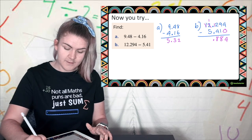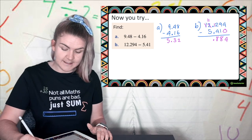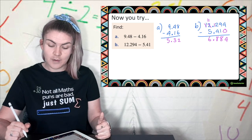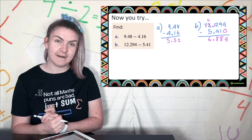1 take 5 we can't do so I borrow this one and that is 11 take 5 which is 6 and then there's nothing else left. Check the reasonableness. 12 take away 5 is 7. This is approximately 7 so my answer is 6.884.